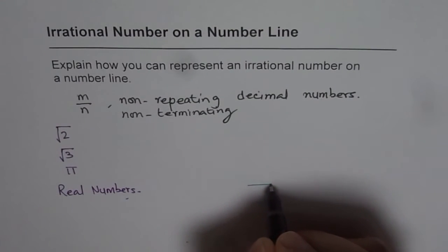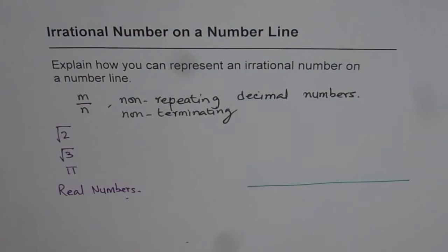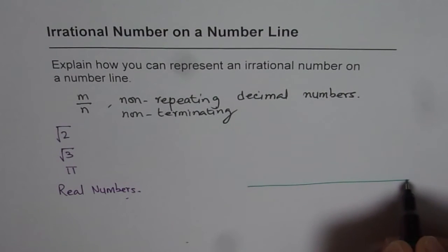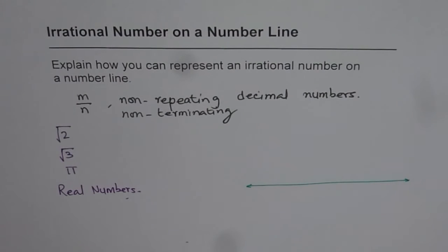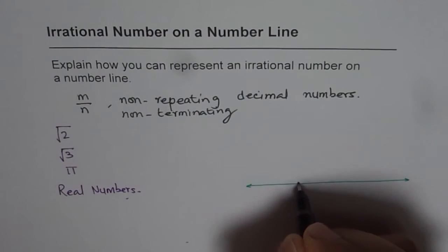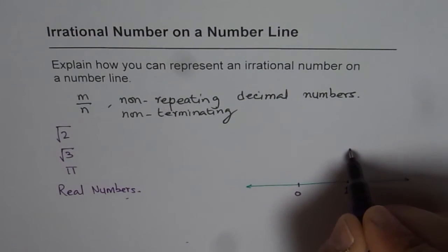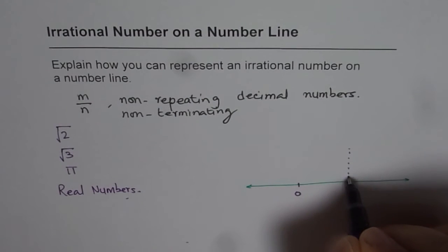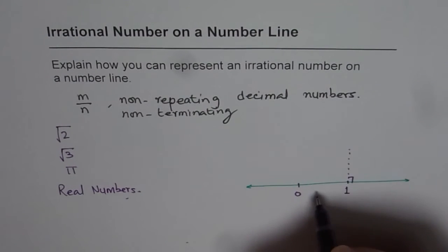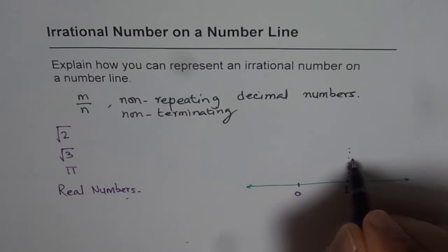So this is what we are going to see here in this video. Now let us say this line represents a number line and on this number line, let me say this is 0 and this is 1 unit. Now if I construct 1 unit perpendicular to this, let us say like this.